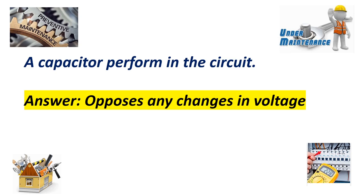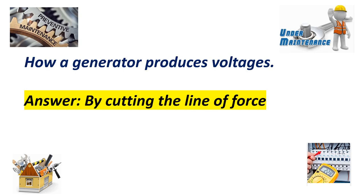Question number one. A capacitor performed in the circuit? Answer: Opposes any changes in voltage. How a generator produces voltage? Answer: By cutting the line of force.